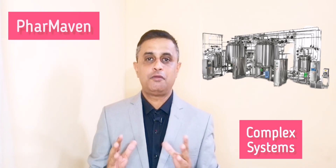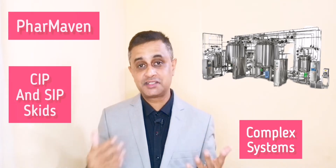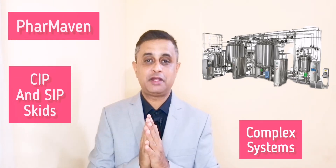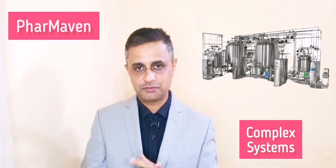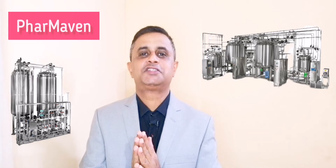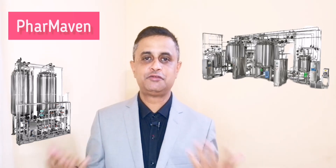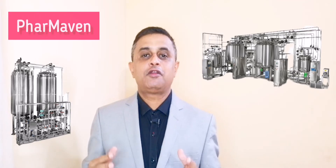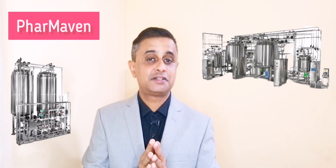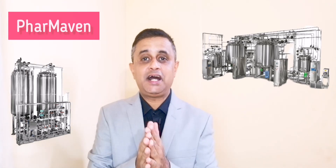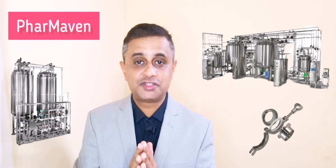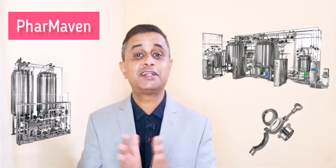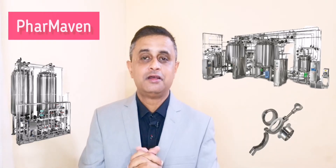In this specific video I will be talking about media fill failures associated with complex manufacturing systems — where there are SIP skids, CIP skids, and a lot of vessels involved. When we have skids in the system it prevents aseptic connections, but the challenge with skids is the same as with manual connections: there are a lot of gaskets and clamps, and you have to ensure all connections are intact and properly sealed.